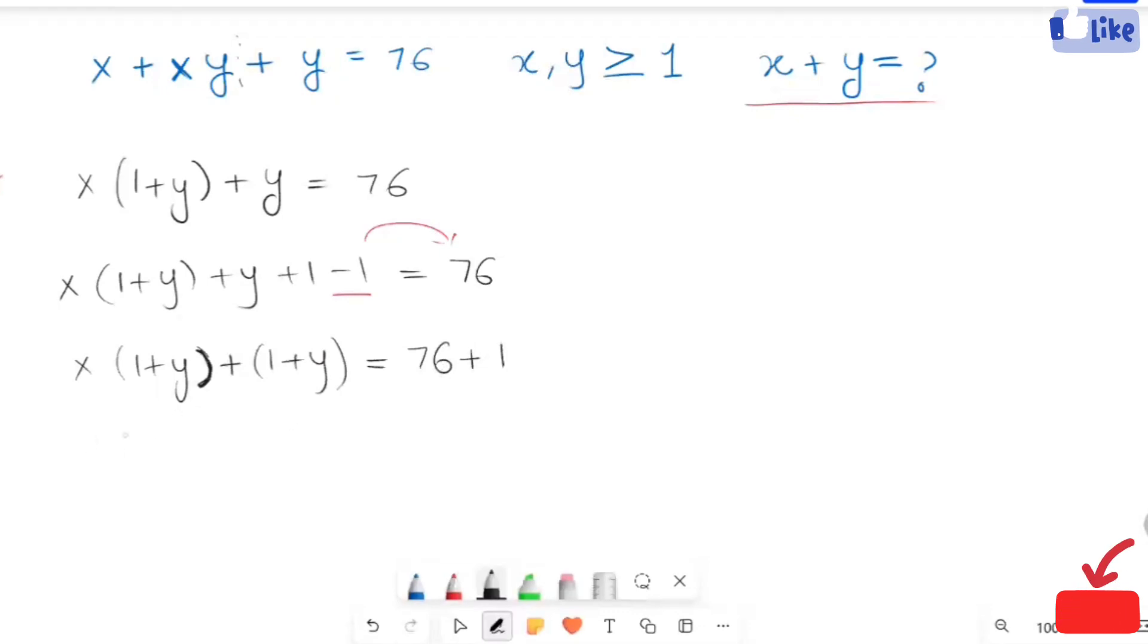I'm going to take a factor here that is 1 plus y, and from this side this remaining replacement I'm going to write 1 equals 77.